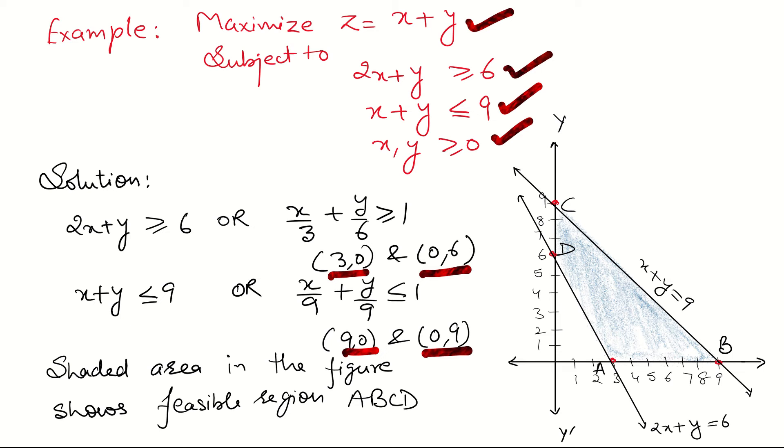If we see this shaded area very carefully, this constraint x plus y equal to 9 is on the boundary of the shaded region and is parallel to objective function z. When any constraint is parallel to the objective function, there is a case of multiple optimal solution.